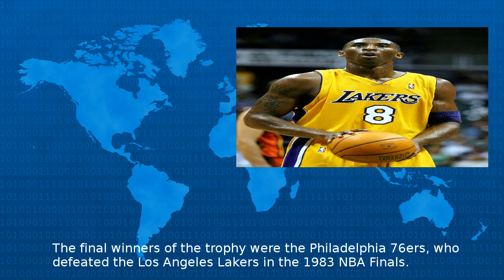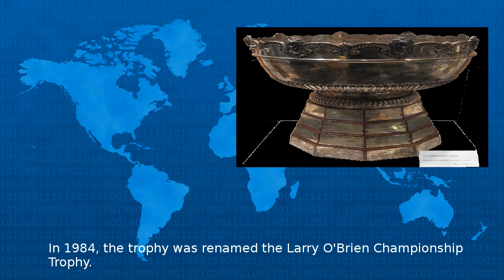The final winners of the Walter A. Brown Trophy were the Philadelphia 76ers, who defeated the Los Angeles Lakers in the 1983 NBA Finals. In 1984, the trophy was renamed the Larry O'Brien Championship Trophy.